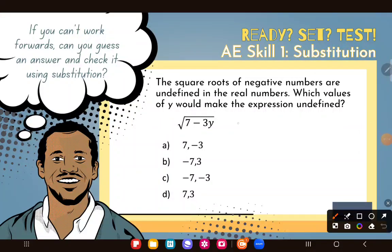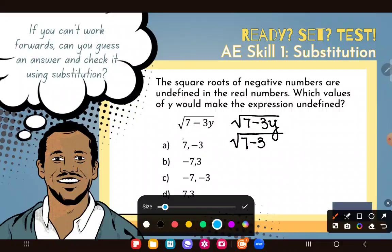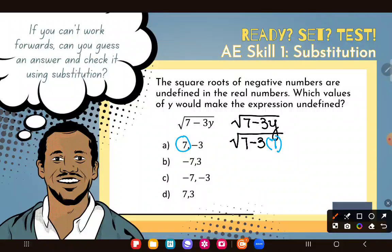So let's start with this original expression here, seven minus three Y, all of that under a square root symbol. And let's plug in the values that we know. We're gonna take the square root of seven minus three, and I'm not gonna write Y anymore, I'm gonna write a value for Y. Let's try seven first. And notice I did plug that seven in using parentheses because the three and the Y are shoved together, they're multiplying.